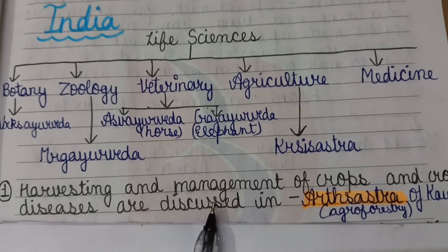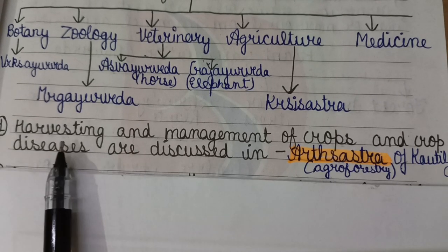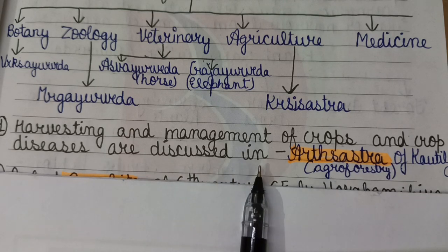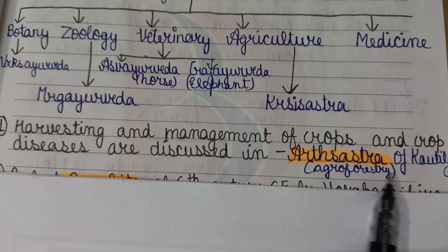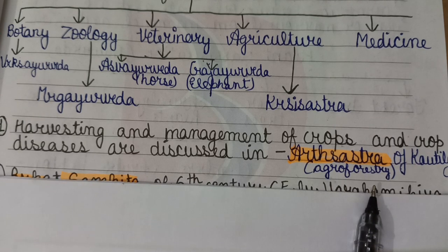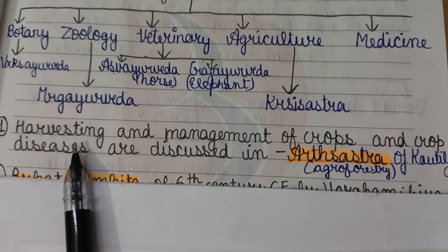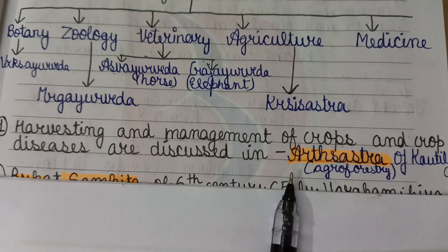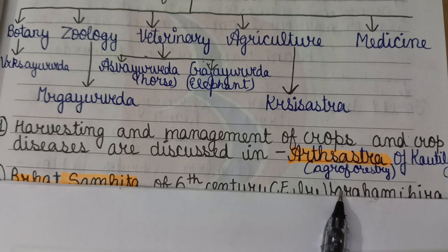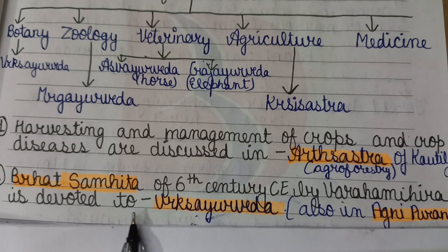The harvesting and management of crops and crop diseases are discussed in Artha Shastra of Kautilya. This part is also known as Agroforestry.